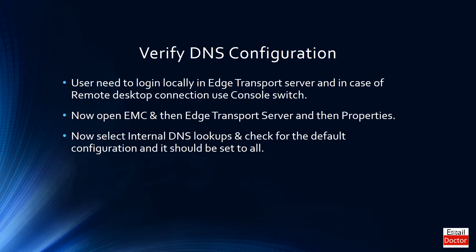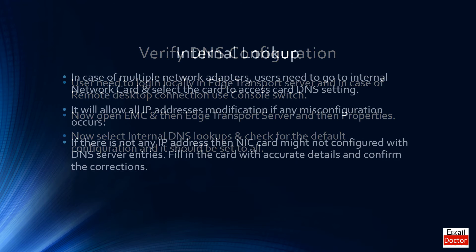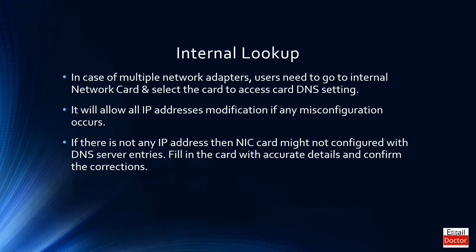Now the user has to open EMC, go to the edge transport server properties, and then select Internal DNS Lookups. Check for the default configuration — it should be set to all for internal lookup.